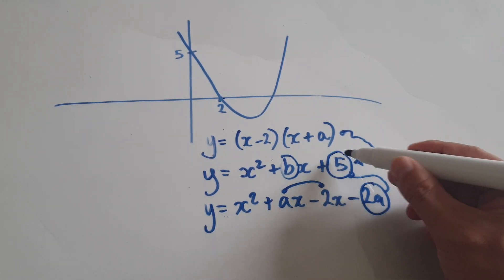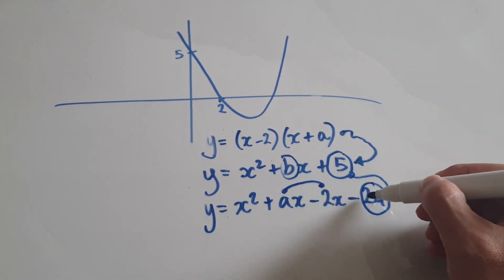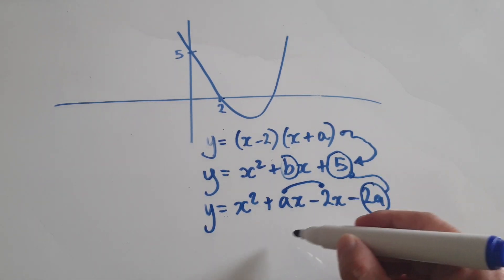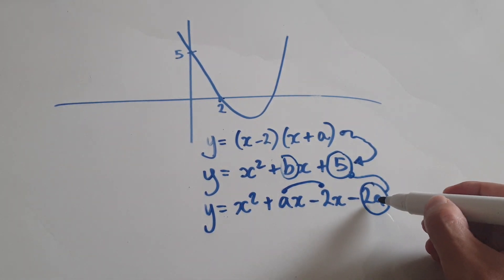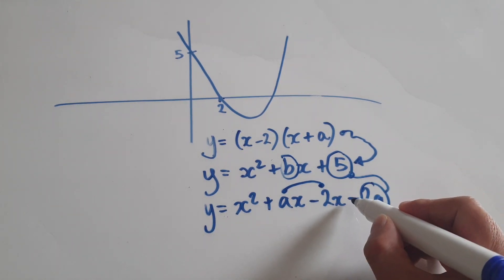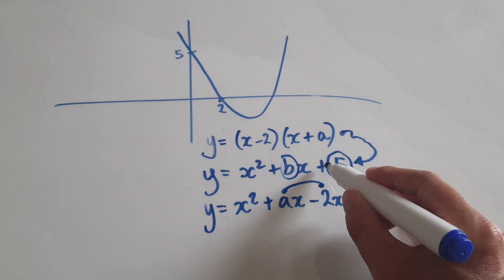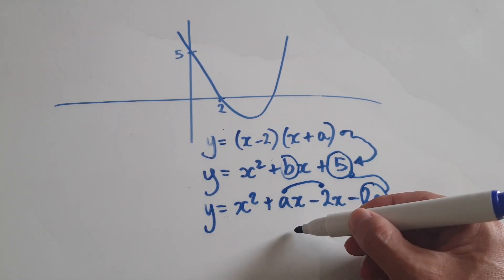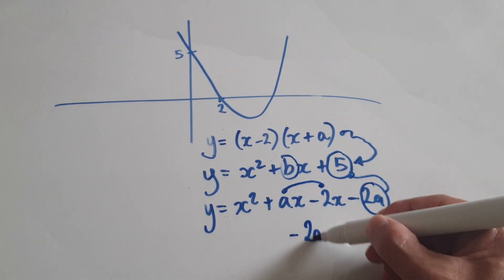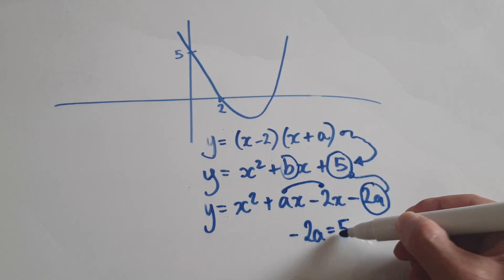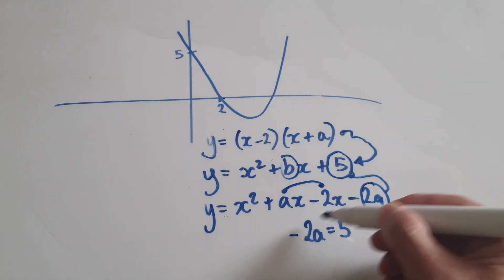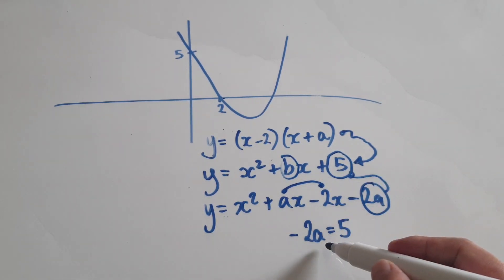What that means is I want this number to be negative 5. I want this thing here to be negative because I've got a negative in there and I want a positive here. So really I want this bubble to be the number 5 because two negatives will give a positive.